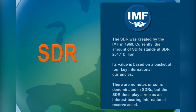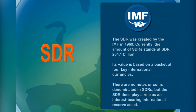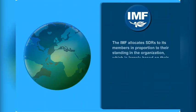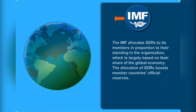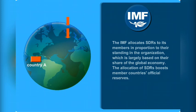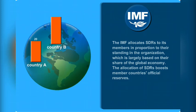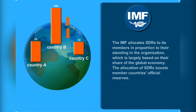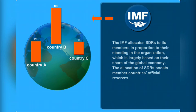There are no notes or coins denominated in SDRs, but the SDR does play a role as an interest-bearing international reserve asset. The IMF allocates SDRs to its members in proportion to their standing in the organization, which is largely based on their share of the global economy. The allocation of SDRs boosts member countries' official reserves.